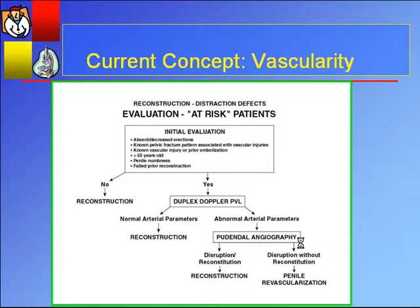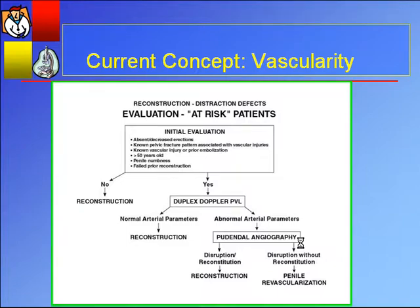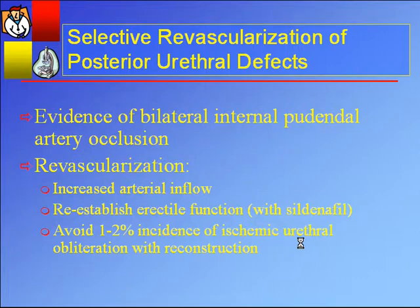A new concept is vascularity — patients have a significant devastating injury to the proximal urethral blood supply and often the blood supply is inadequate. You can do a urethral reconstruction but never achieve success in treating erectile dysfunction. In someone with pre-op erectile dysfunction, penile numbness, a known pelvic fracture, or embolization of the internal pudendal arteries, some will advocate a duplex or ultrasound of the penis. If arterial parameters are abnormal, proceed to angiography; if there's a significant disruption and no collateralization, intend for penile revascularization. These are very select patients — revascularization will achieve increased inflow and reestablish erectile function, possibly not completely due to neural injury, but with PDE5 inhibition this can rescue patients so they can use oral therapy rather than a penile prosthesis long-term.